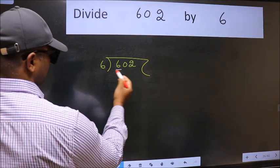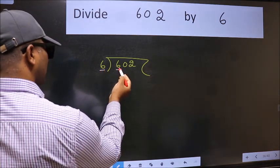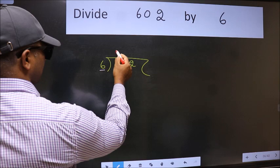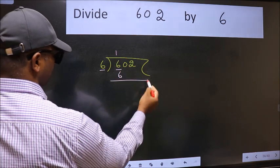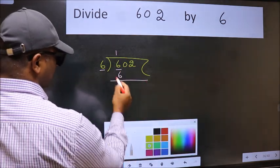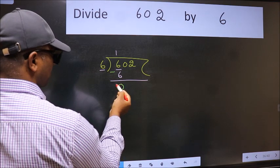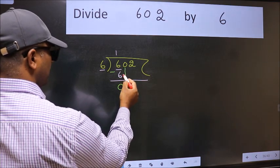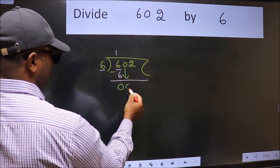Here we have 6 and here 6. When do we get 6 in 6 table? 6 once 6. Now we should subtract. We get 0. After this, bring down the beside number. So 0 down.